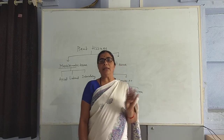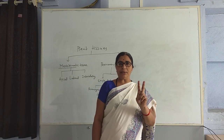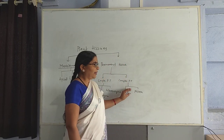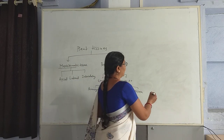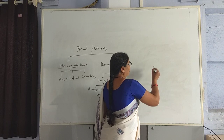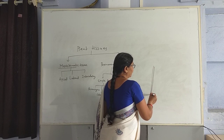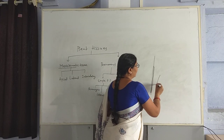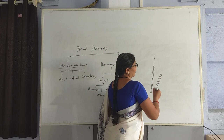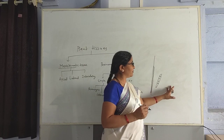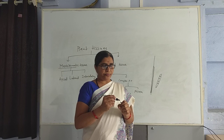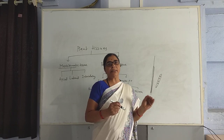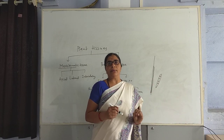The four types of cells of the xylem tissues are tracheids, vessels, xylem parenchyma, and xylem fibre. Tracheids mainly transfer water from the bottom, the root of the plant, to the tip. The vessels have pits in them, and these pits help to transfer water to the side of the plant. Xylem parenchyma stores food, and xylem fibre basically gives strength and support to the plant.